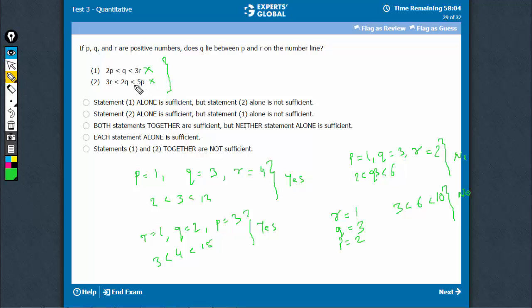On combining, what happens? On combining, see, combining doesn't help because here 3r is greater than 2p. So, r is greater than 2p by 3, sorry, greater than 2p by 3. So, this tells that r is definitely greater than 2p by 3, and this one tells that r is less than 5p by 3, okay?